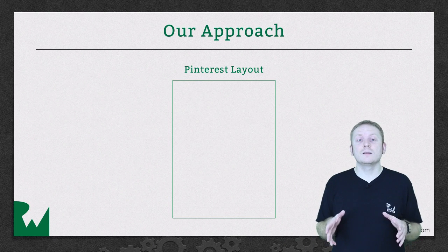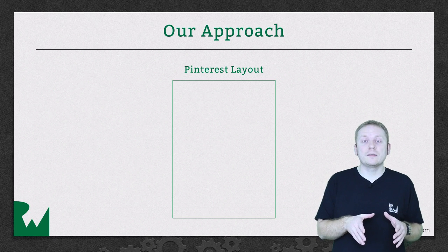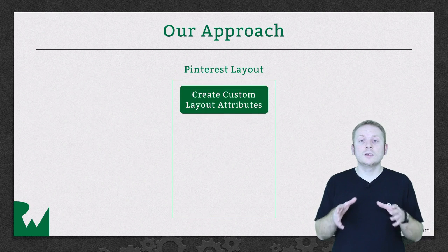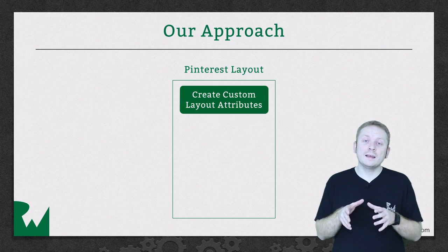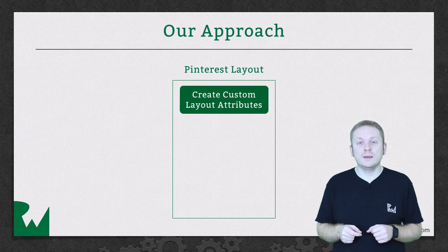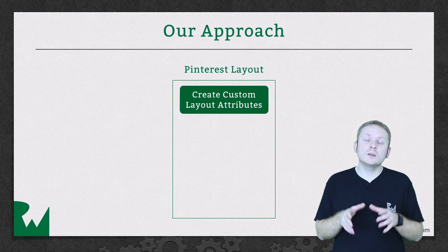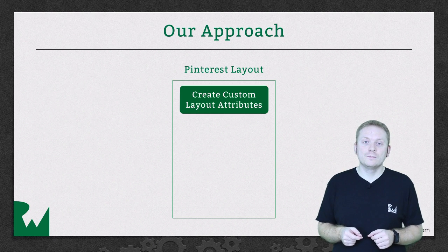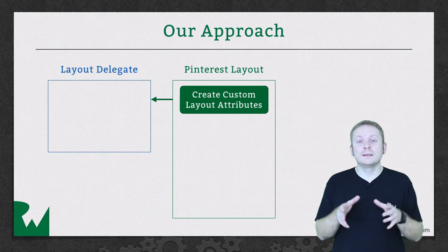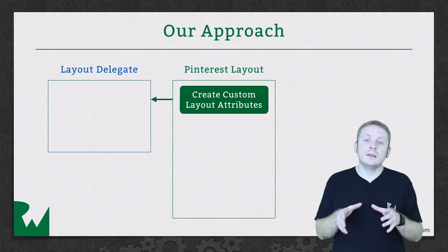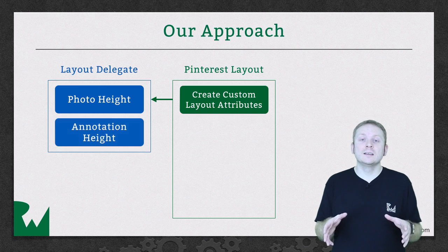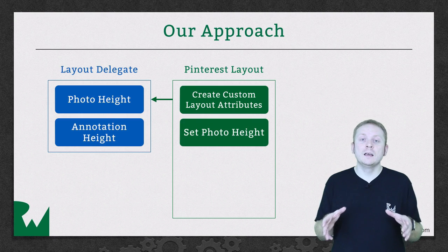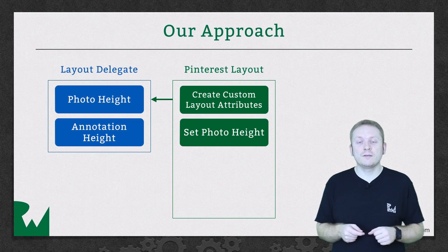There are a number of changes we need to make to our layout implementation before we can start passing data from our layout to our cells. First, we need to subclass UICollectionViewLayoutAttributes, define our new photo height property, and update our layout so that it creates instances of our new layout attributes subclass. Then we need to update our custom delegate protocol so we can request the height of the photo and the height of the annotation independently, which will allow us to set the photo height property on our new layout attribute subclass to the correct value.